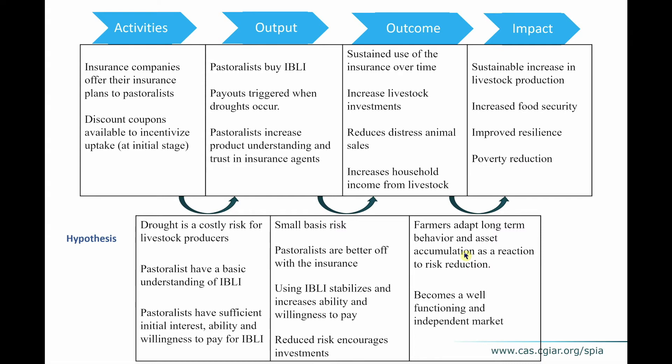For the final impacts to occur, there needs to be long-term behavior change from the pastoralists: now that they know risk is reduced, they should be willing to invest more. On the institutional side, the insurance supply needs to be consistent over time. Once this theory of change is complete, we have a much better overview of the main risks: not understanding the product, institutional challenges like high basis risk, or insurance that cannot be sustained. All these required behavior changes help you identify what kinds of risks are related to this project.